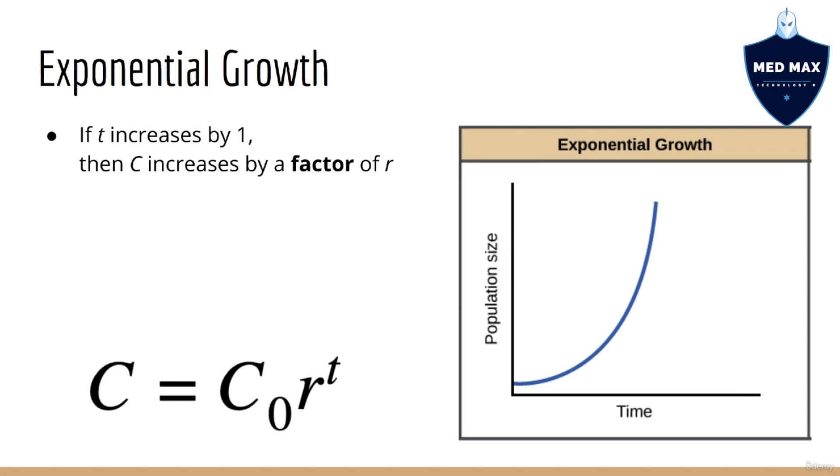You can see that if t increases by 1, then c increases by a factor of r. This holds true for all time periods. So if I'm at t equals 1 going to t equals 2, I can find the next value simply by multiplying by r, and similarly if we're going from t equals 2 to t equals 3.